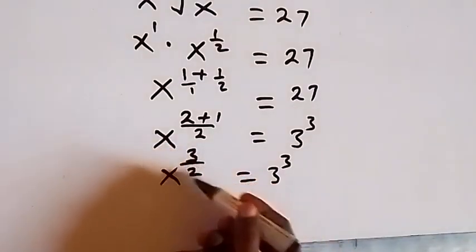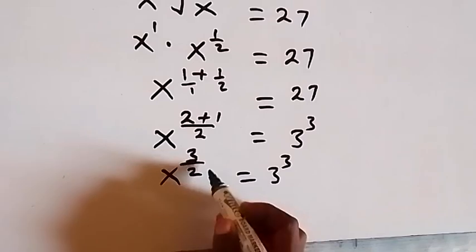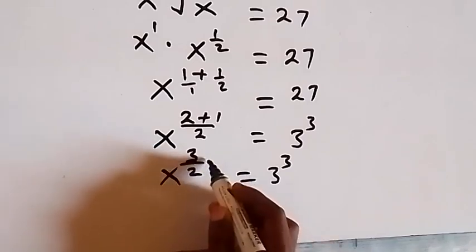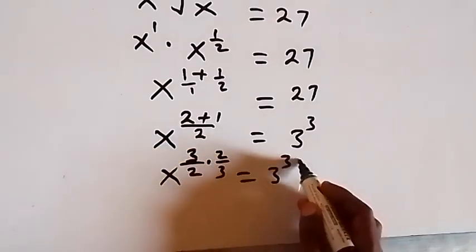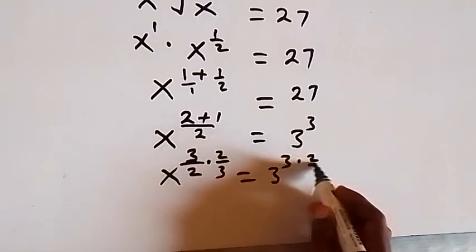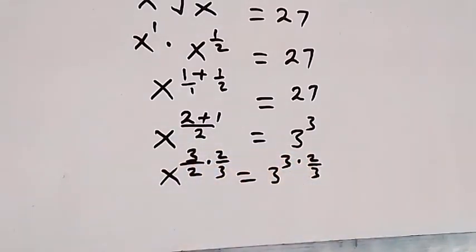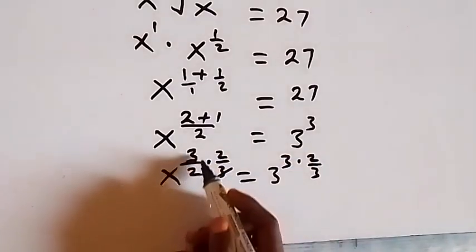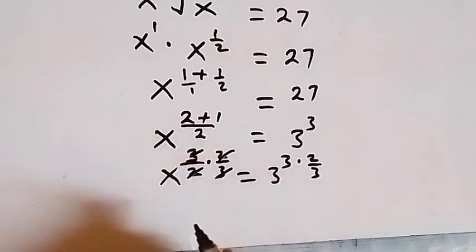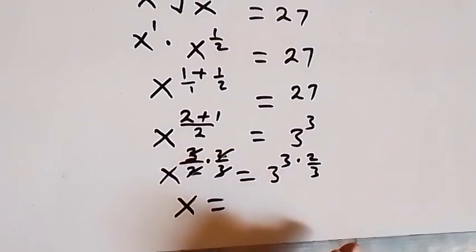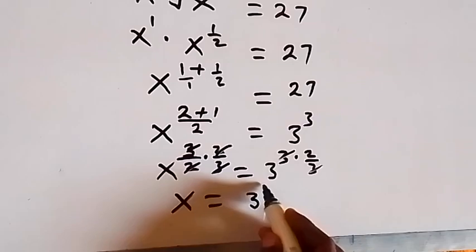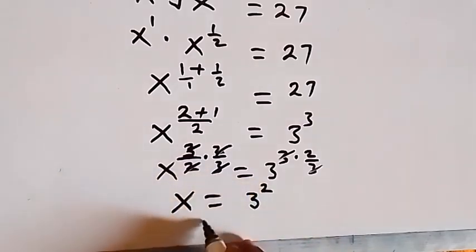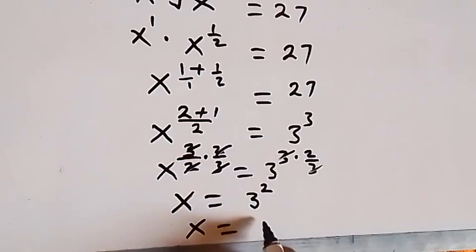Let's remove this 3 over 2. We need to multiply the power with the reciprocal, which is 2 over 3. Multiply both powers by 2 over 3. This will cancel out and it will remain just x. 3 times 2 over 3 will cancel, which will remain 3 squared. 3 squared is 3 times 3, and x equals to 9 from here as well.